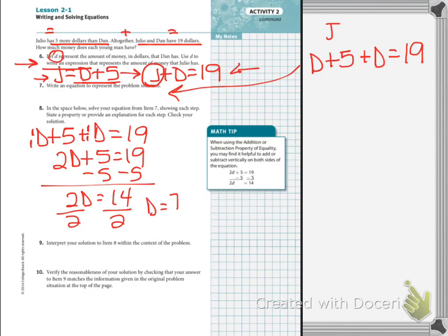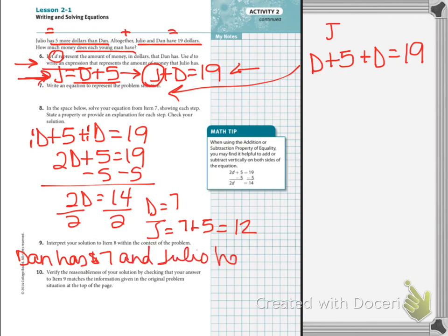But did we answer the question? Well, no, because the question says how much does each one have? Well, if Dan has 7, and we know, coming back here, that Julio is Dan plus 5. So Julio has 12. So what does this mean? This means Dan, we're going to write a sentence. Dan has 7 dollars, and Julio has 12 dollars.